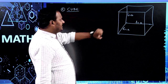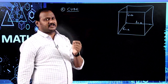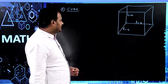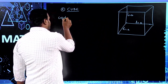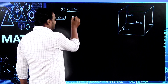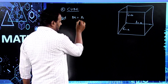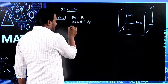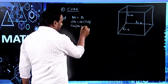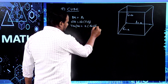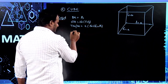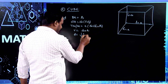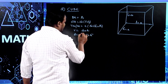If you understand cuboid, then you can understand cube in a much better way. For a cuboid, base area equals length times breadth; lateral surface area equals 2H(L+B); total surface area equals 2(LB + BH + LH); volume equals base area multiplied by height; and diagonal equals √(L² + B² + H²).